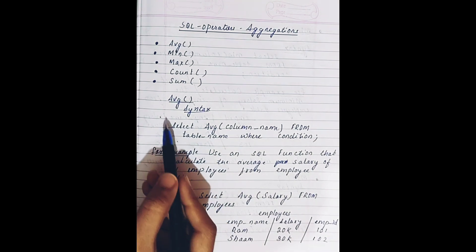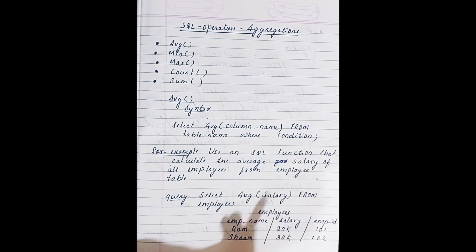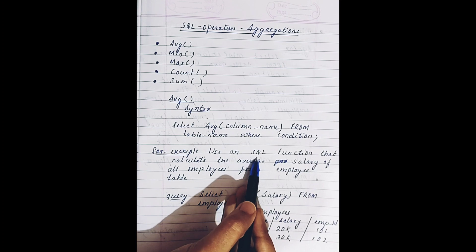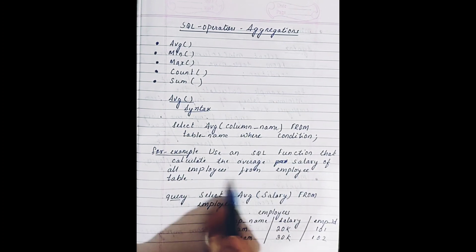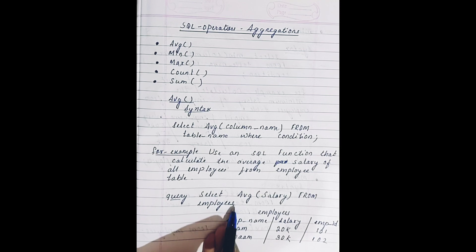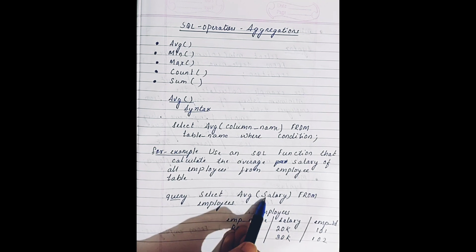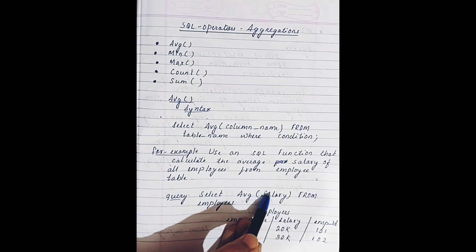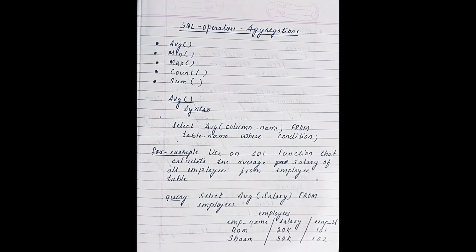The syntax of the average function is: SELECT AVG(column_name) FROM table_name WHERE condition. For example, to calculate the average salary of all employees from the employee table, the query will be: SELECT AVG(salary) FROM employees. This will return the average of all the records of the specified column — here, the salary column.